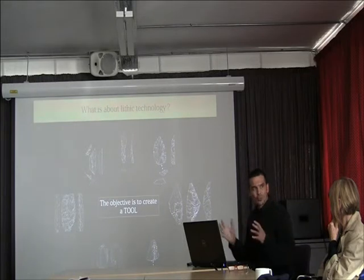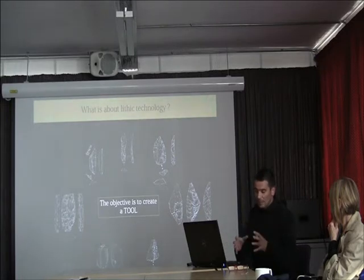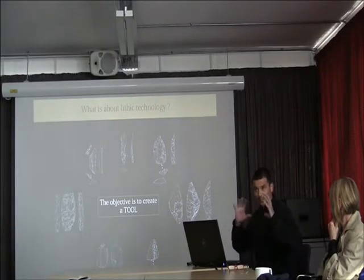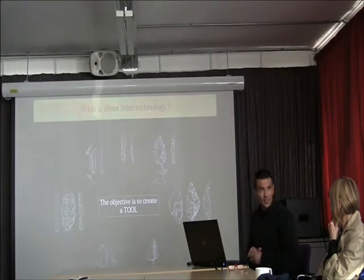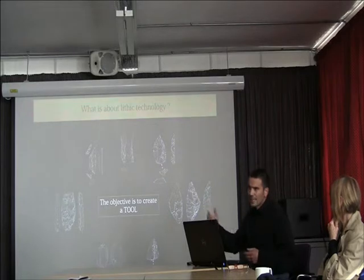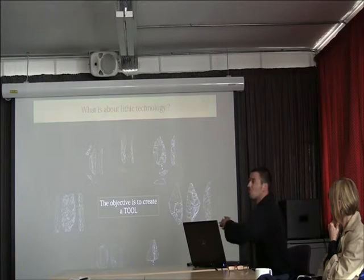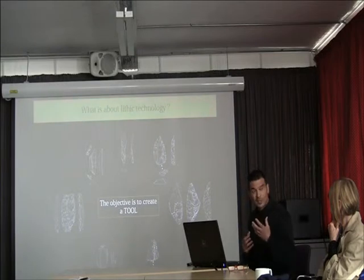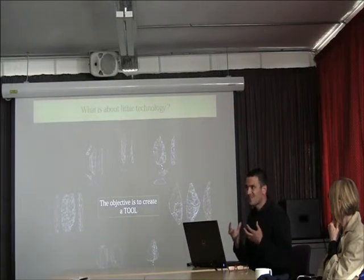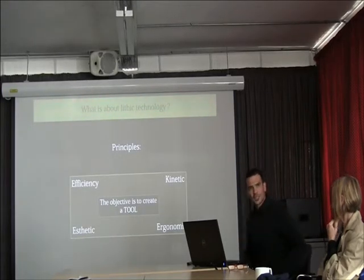In terms of global structure, a tool is always an opposition between a passive portion and an active portion. This is the basic structure of a tool, after which you have a lot of variability. The tools shown here are only from Diepkloof, but if you take examples from other sites, other regions, and other time periods, you have much more variability. The key point is: what dictates the variability of the tool? That's what we have to understand.